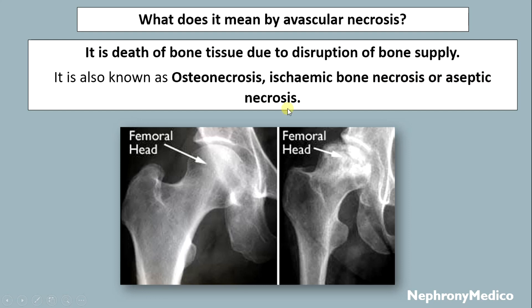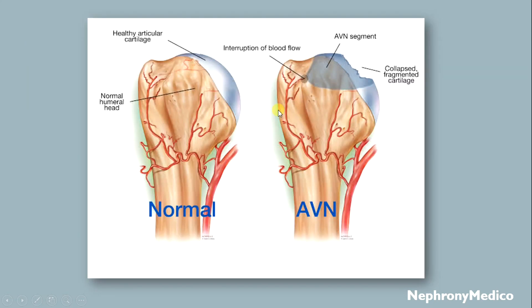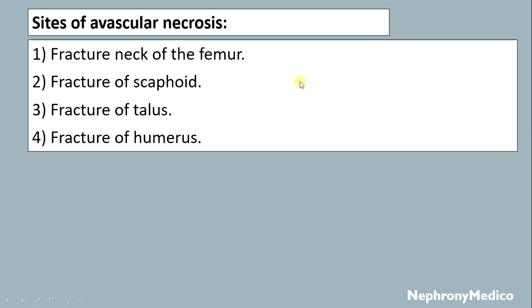This is a picture showing a normal femoral head, and this is a picture showing the femoral head with avascular necrosis. The sites of avascular necrosis include fracture neck of the femur and fracture of the scaphoid.